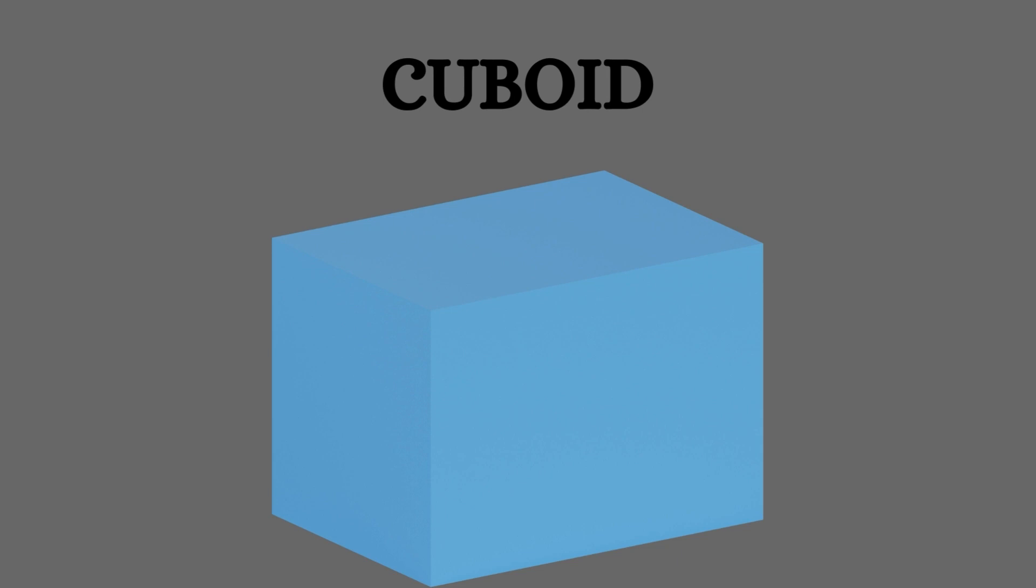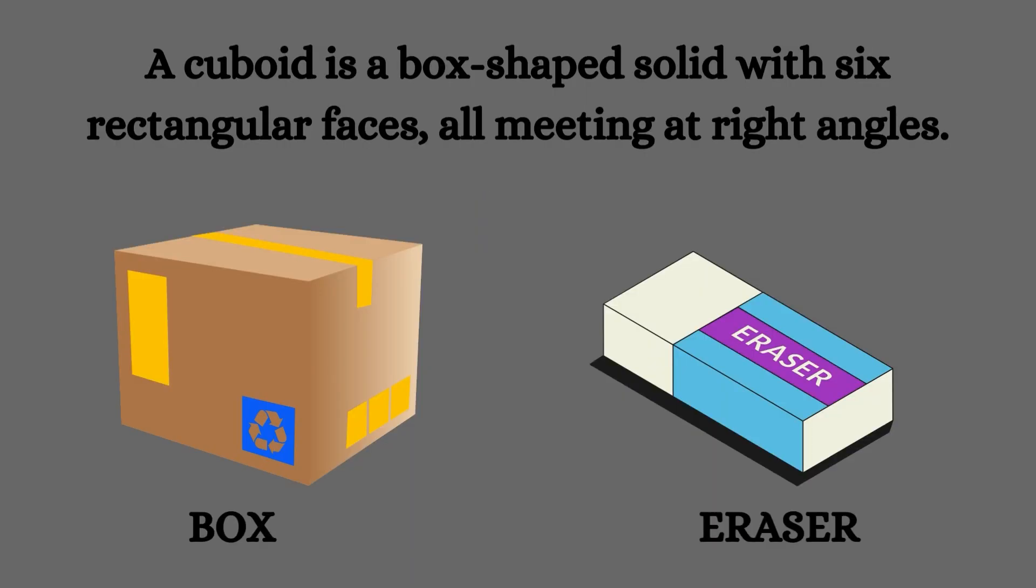Cuboid. A cuboid is a box-shaped solid with six rectangular faces all meeting at right angles. Examples include a box and eraser.